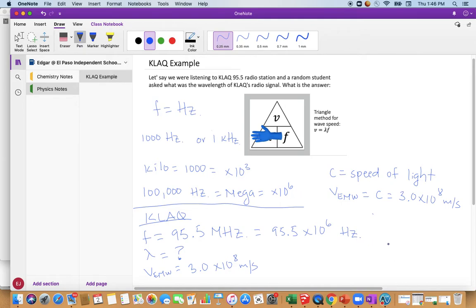Let's write an equation. Lambda equals velocity divided by frequency. Lambda equals 3.0 times 10 to the eighth meters per second divided by 95.5 times 10 to the sixth hertz.